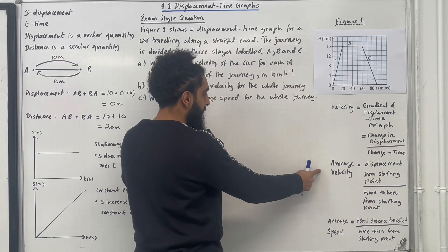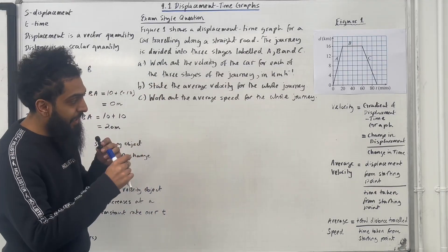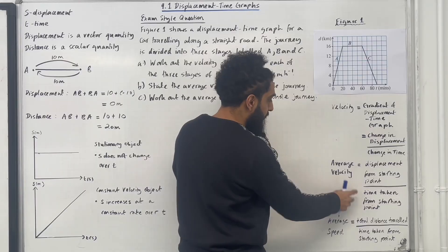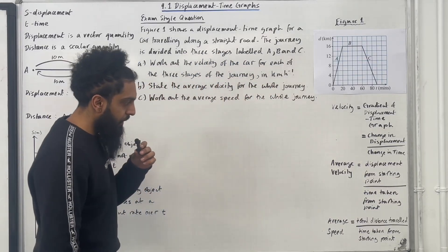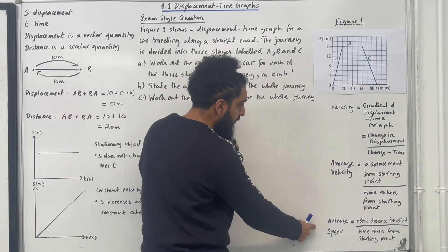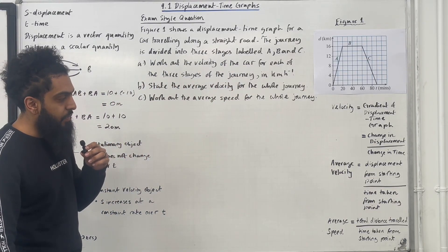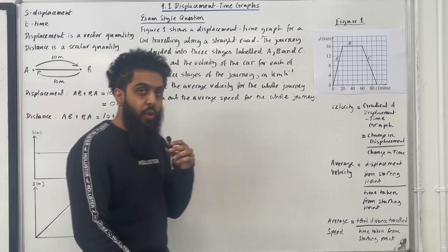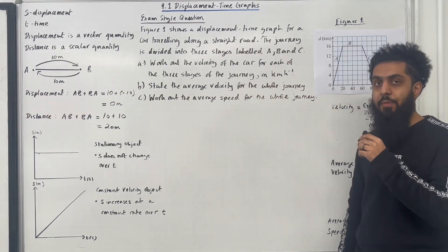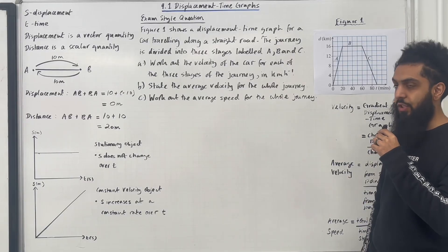The average velocity is given by displacement from the starting point divided by time taken from the starting point. And finally, average speed is given by total distance travelled divided by time taken from the starting point. These are all the key facts of 9.1 displacement-time graphs, which I'll be implementing in this exam-style question.